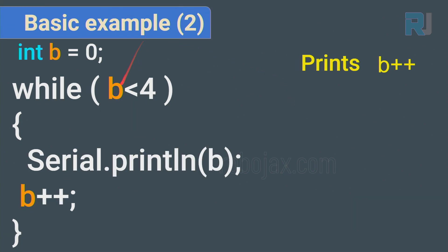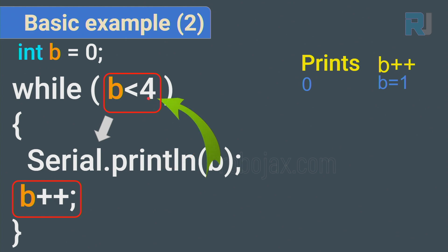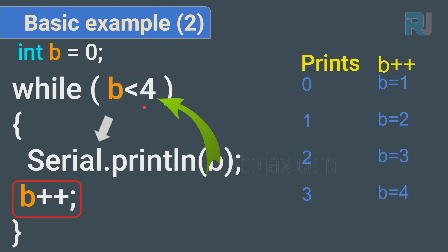Example two: b = 0, and we check while b < 4. b is 0 — is 0 < 4? True, print 0, increment to 1. Is 1 < 4? True, print 1, increment to 2. Is 2 < 4? True, print 2, increment to 3. Increment again to 4. Is 4 < 4? False — the loop exits.